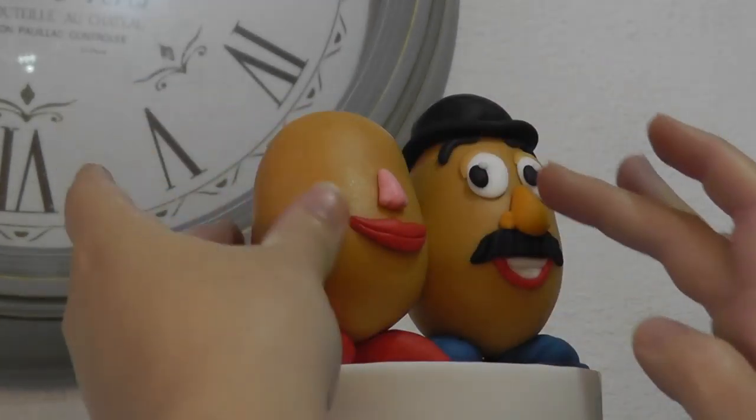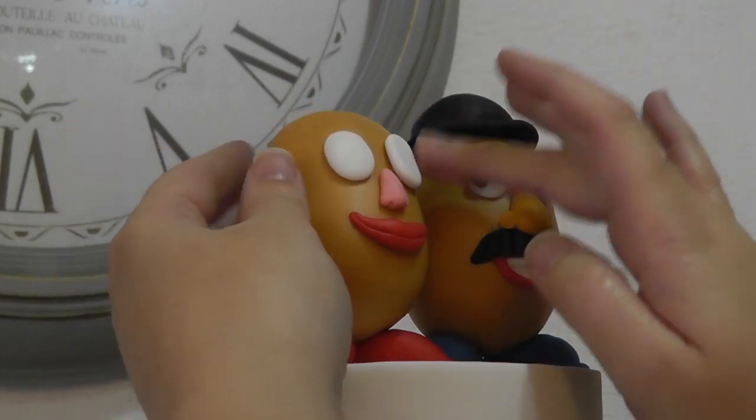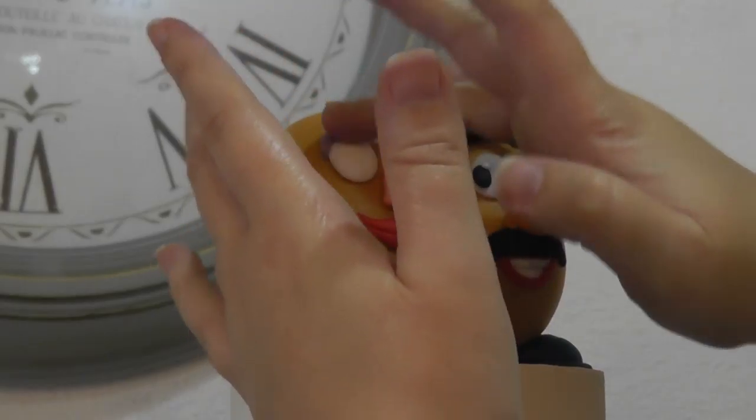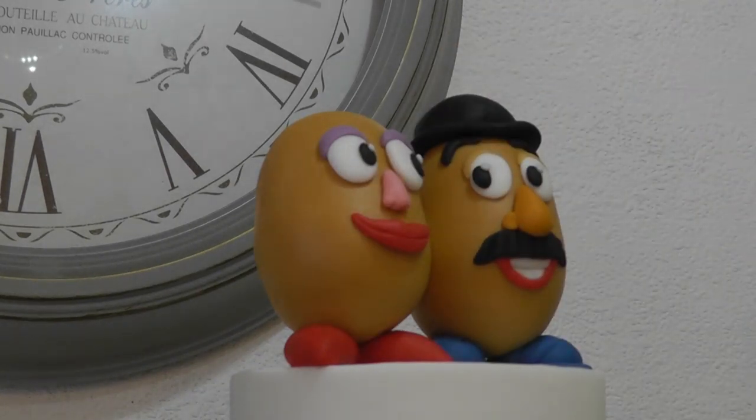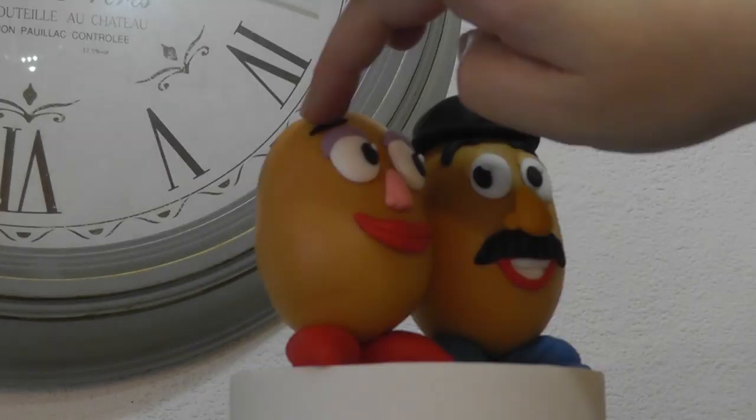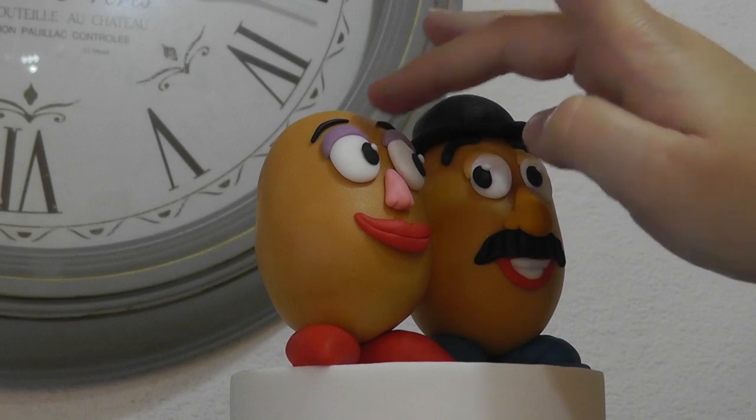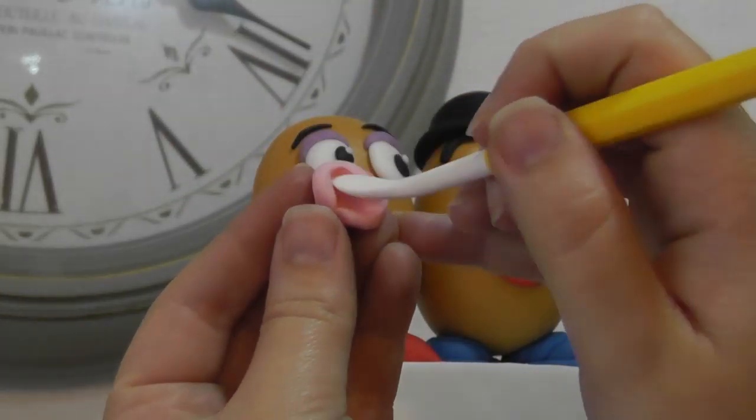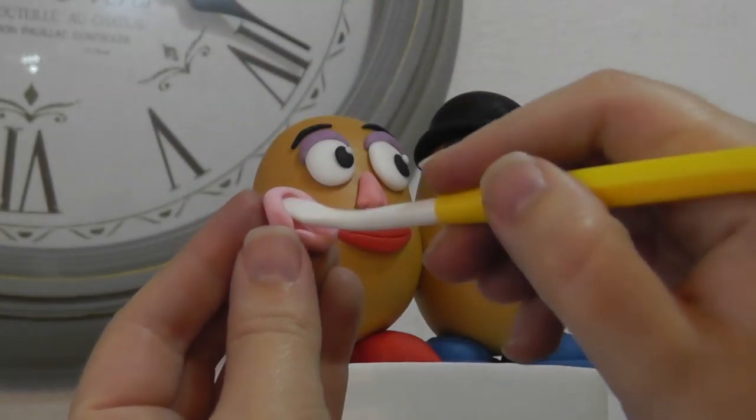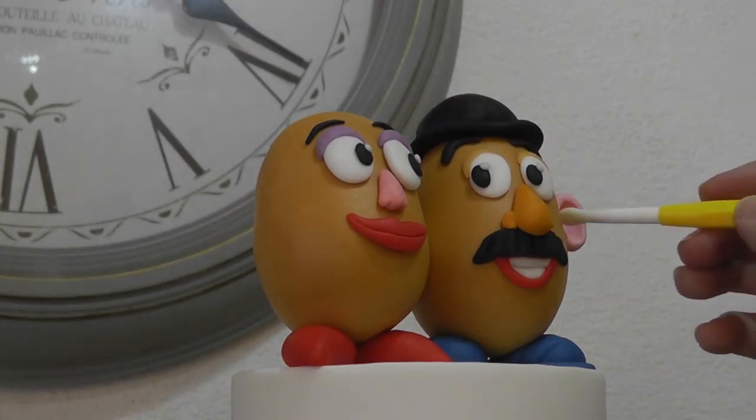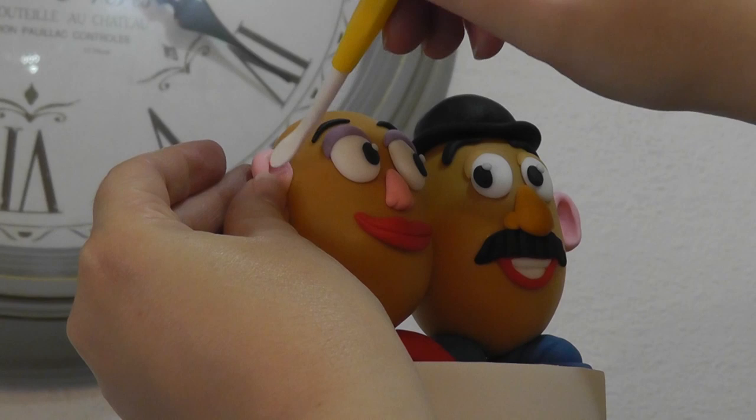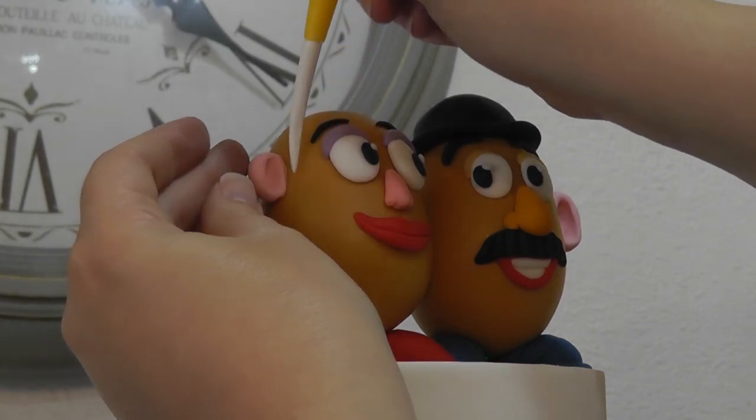Do the same for his missus, but add purple lids for eyeshadow. Ears are done in pink and are hollowed out circles. Mr. Potato Head has larger, more oval ears, while Mrs. Potato Head has smaller circular ones with a yellow ball for an earring.